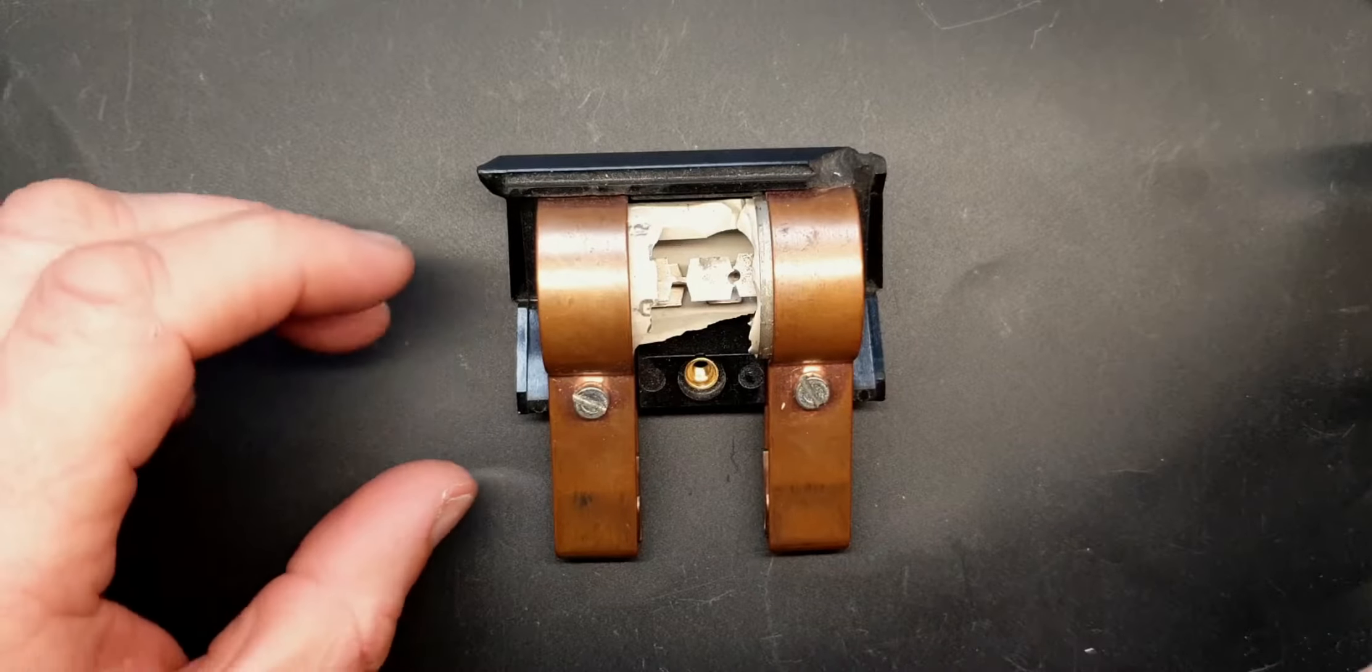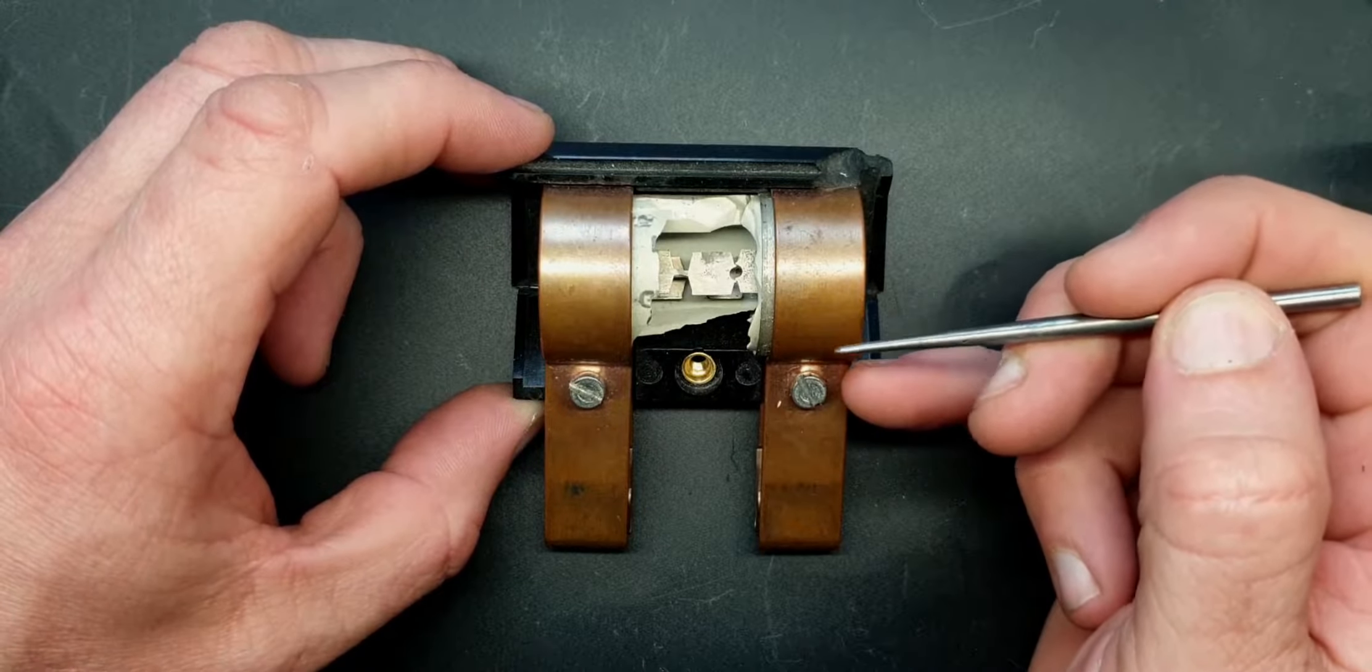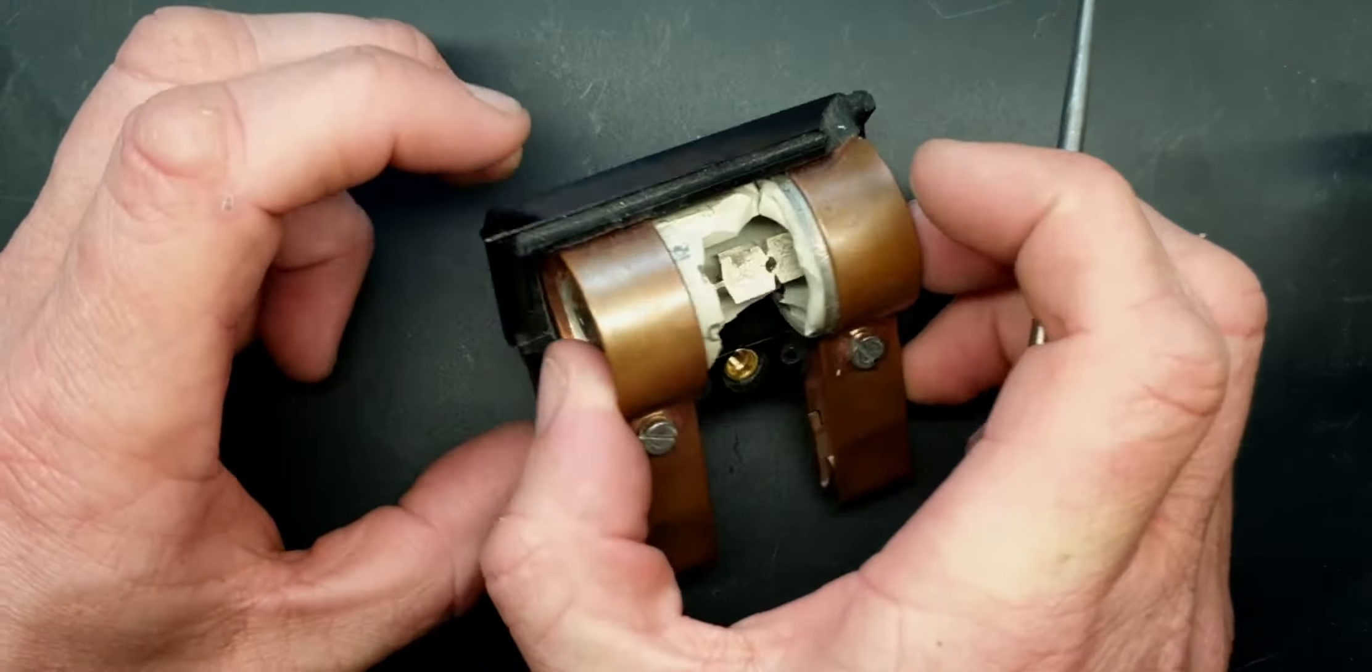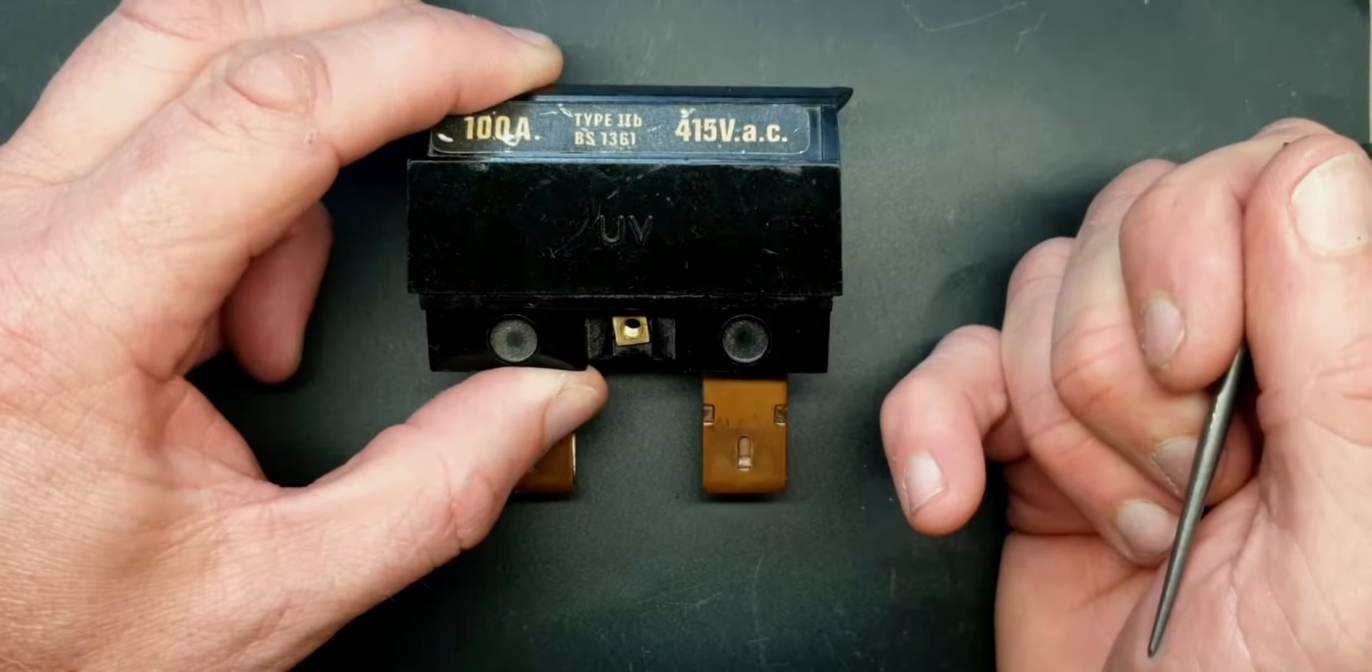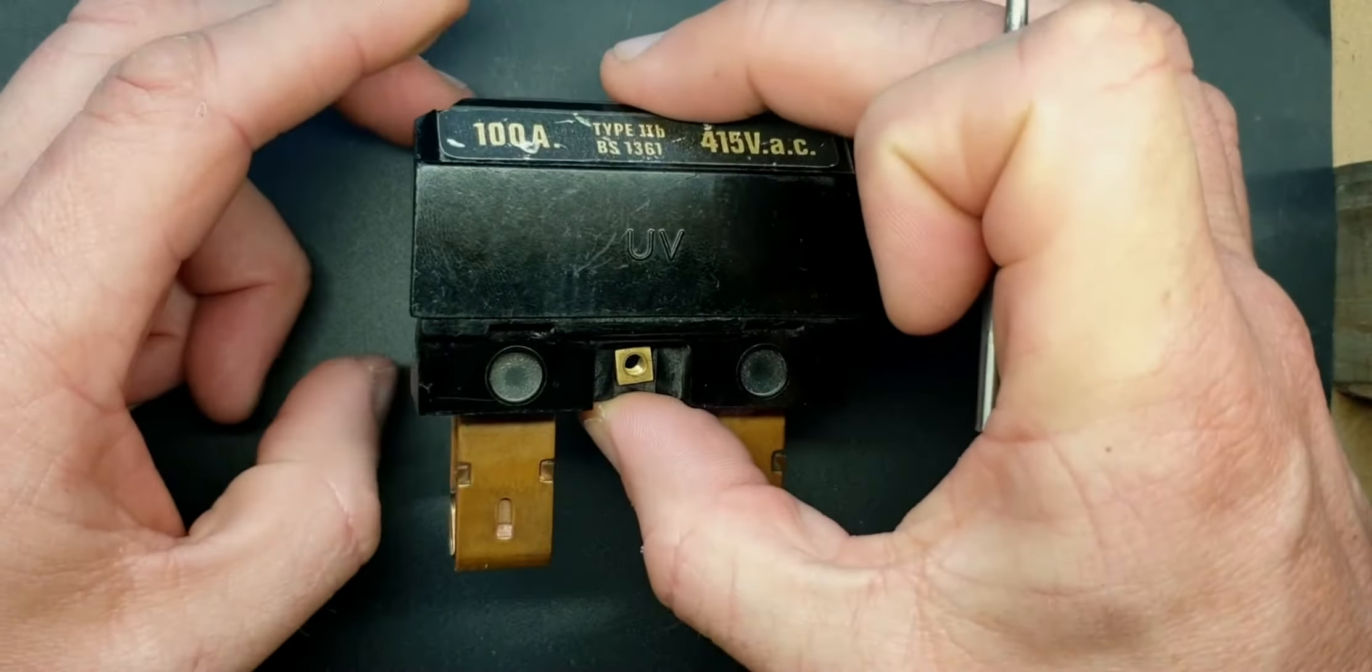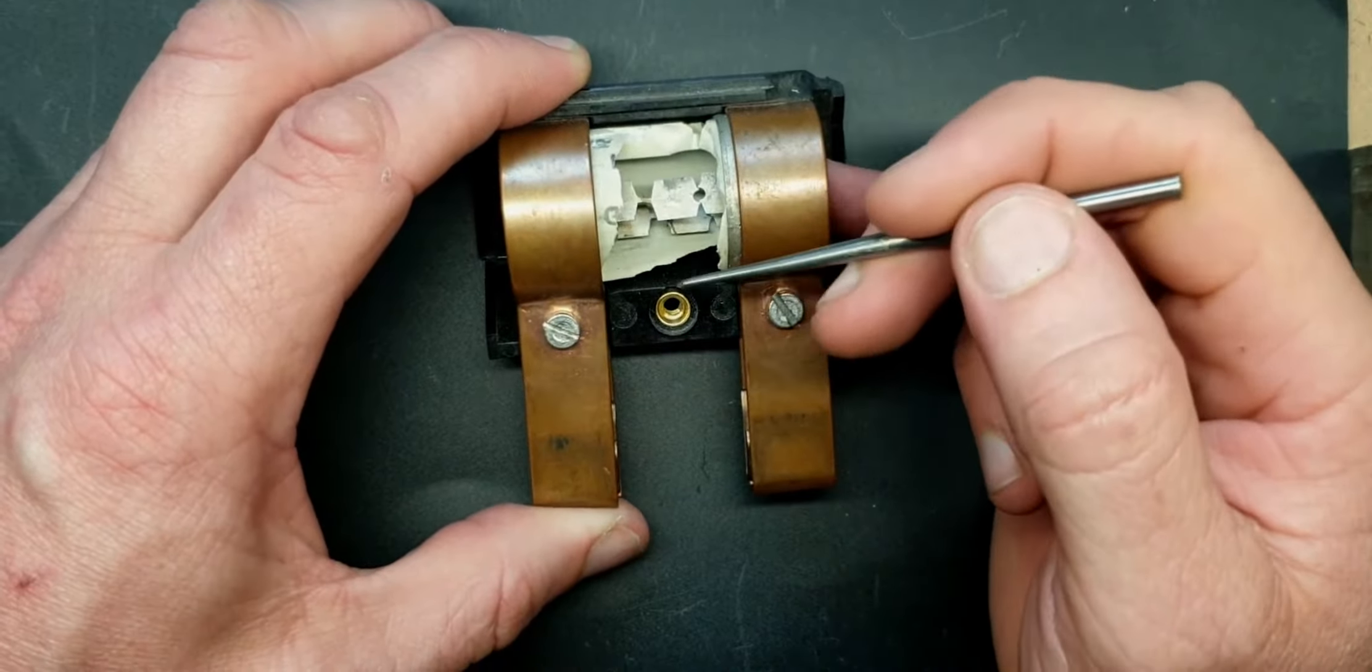Okay guys, what we've got here is an HRC or high rupturing capacity, or HBC high breaking capacity fuse. This one here is a BS88 in a standard domestic 100 amp fuse holder, similar to what you get on the incoming supply of a domestic premises. This is an 80 amp fuse, so the holder can take 100 amps, this fuse itself is only an 80 amp fuse.